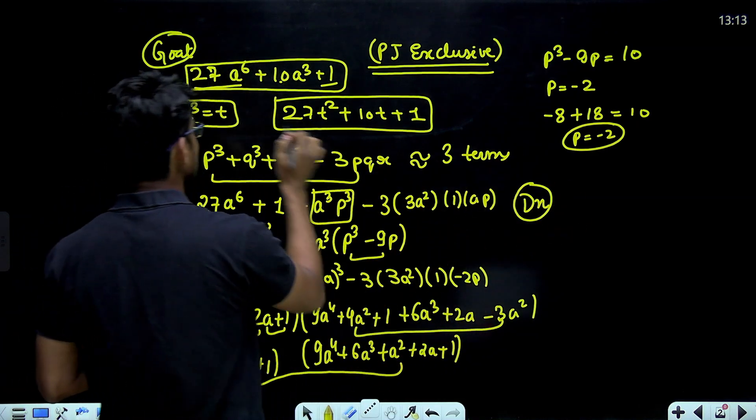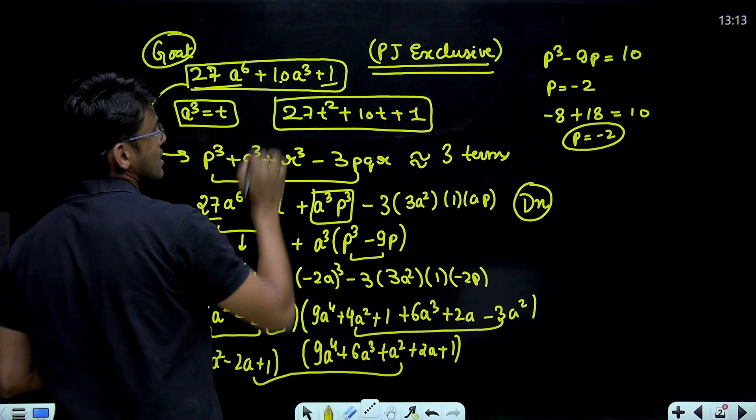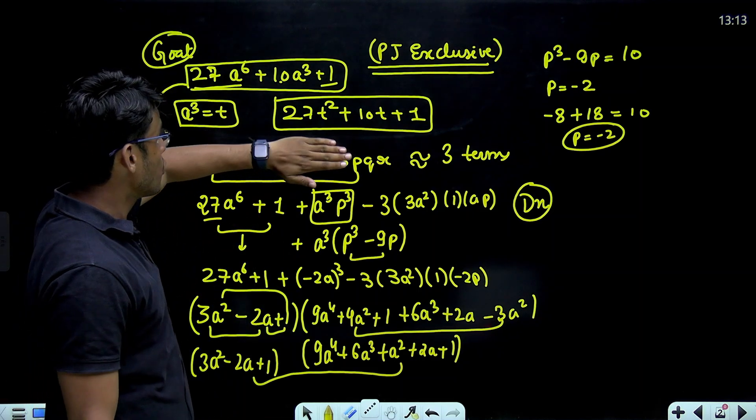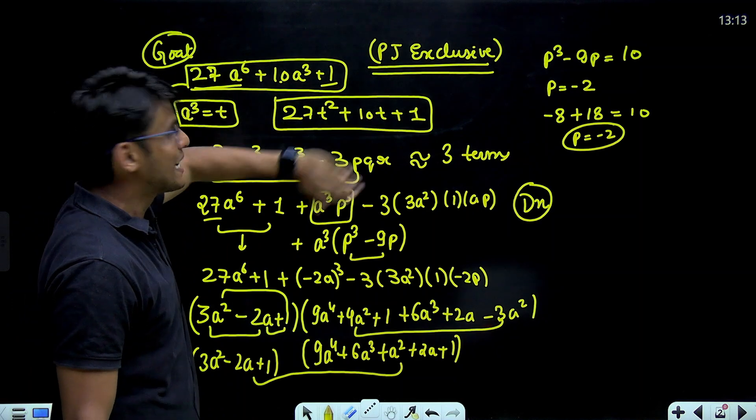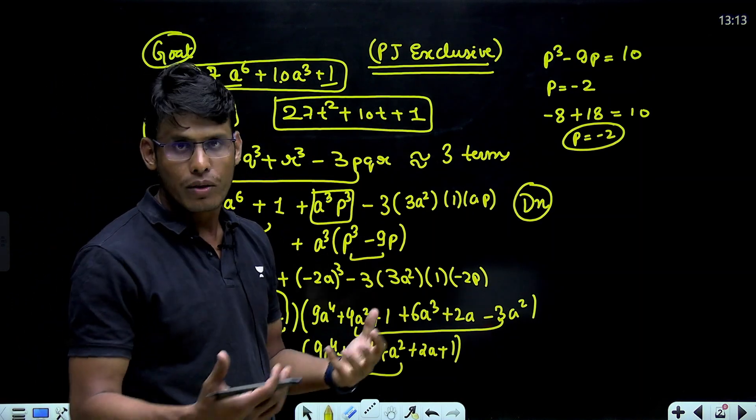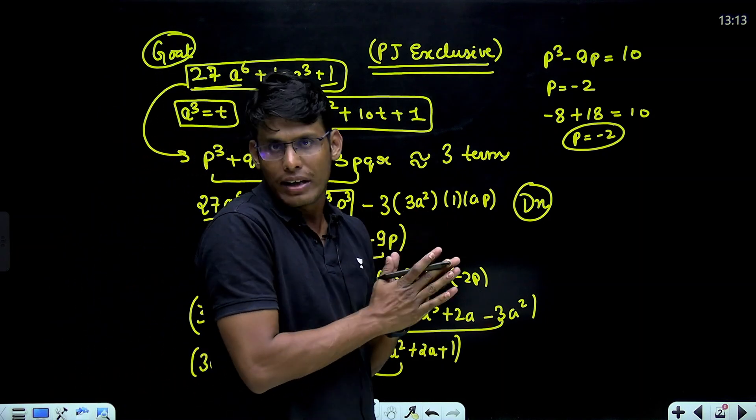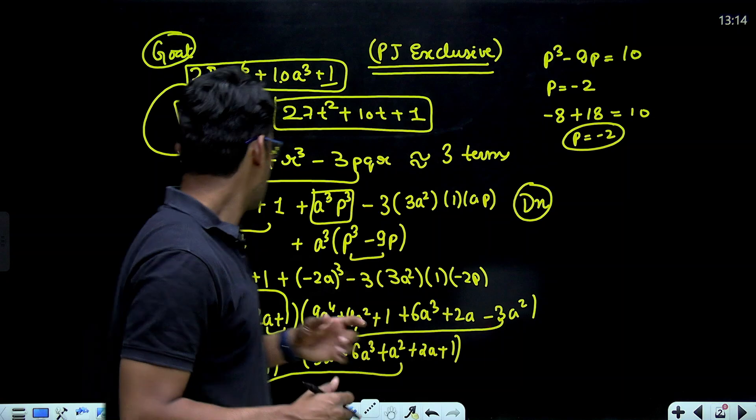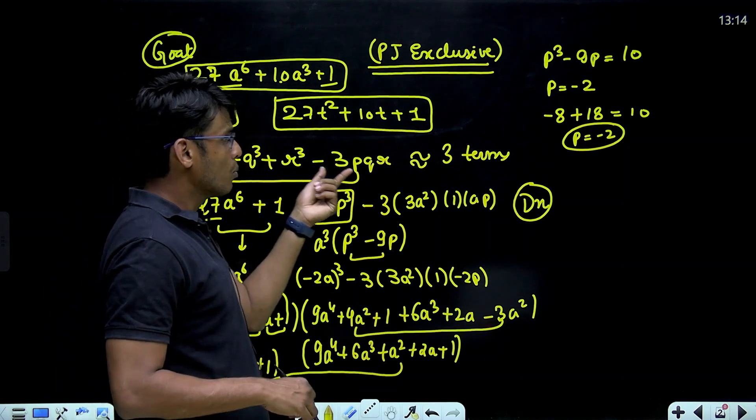First of all, it is a PG exclusive. Like I said, 27a to the power 6 plus 10aq plus 1. Now, one way to look at it is if you assume aq to be t, then you make a quadratic but it is not factorizable at all.